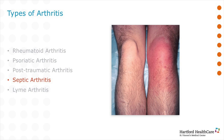Septic arthritis is an infection of the joint. Often bacteria can reach the joint through the bloodstream from an infection in another part of the body. Infected joints are typically warm, red, and tender, and often swollen due to pus within the joint. An infected joint needs surgical drainage in addition to antibiotics. There can be long-term consequences to septic arthritis, including damage to smooth cartilage within the joint leading to arthritis.